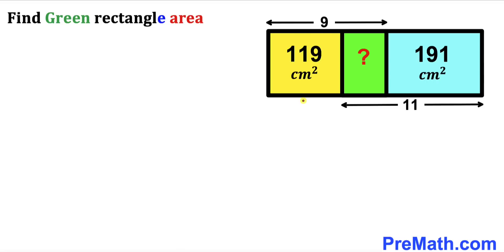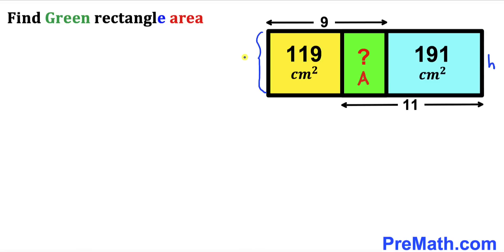Here's our very first step. Let's focus on the green rectangle. Let's assume the area of this rectangle is 'a' centimeter square, and we are going to find the value of 'a'. Moreover, let's assume the height of the big rectangle is lowercase h — then this shared height is lowercase h as well.